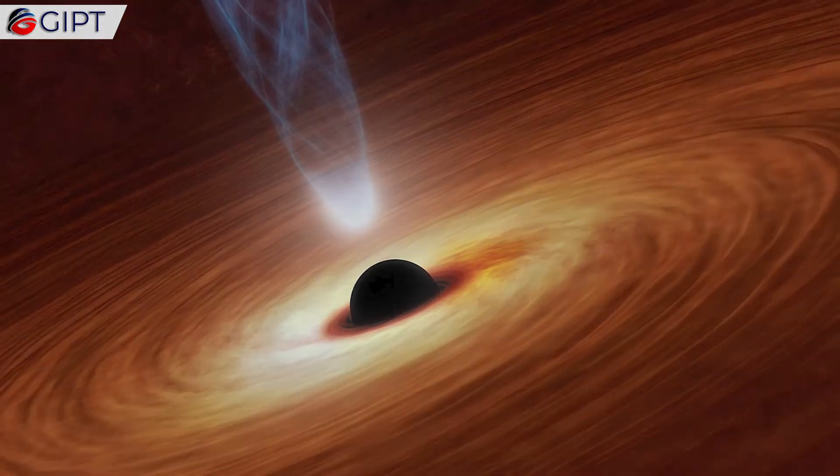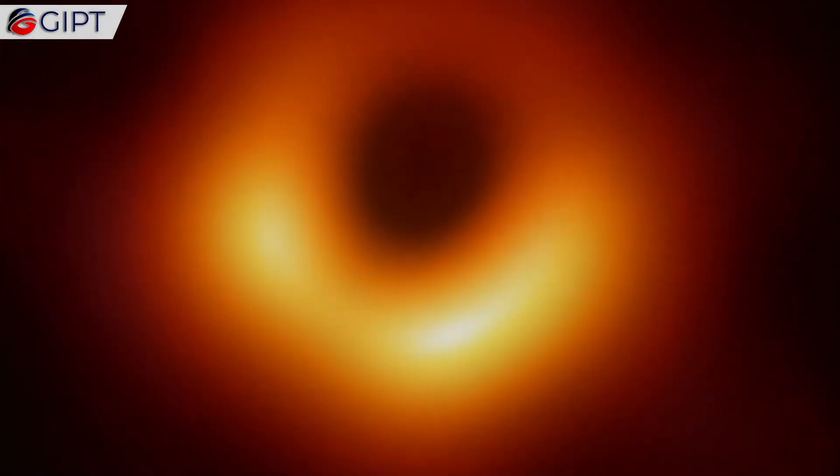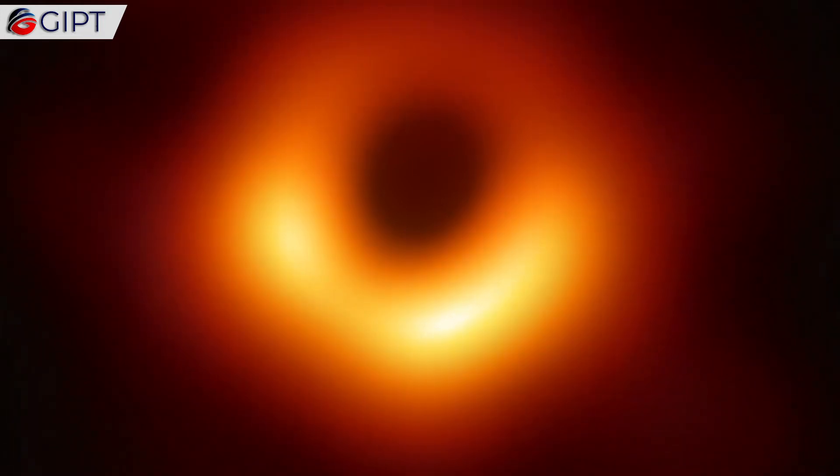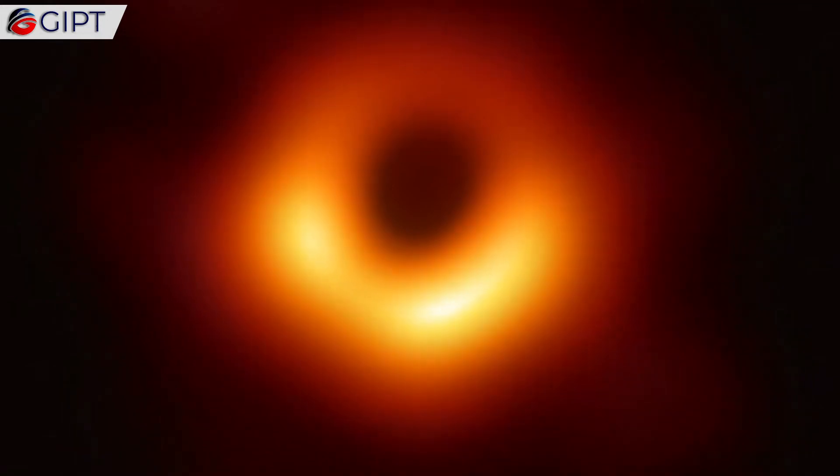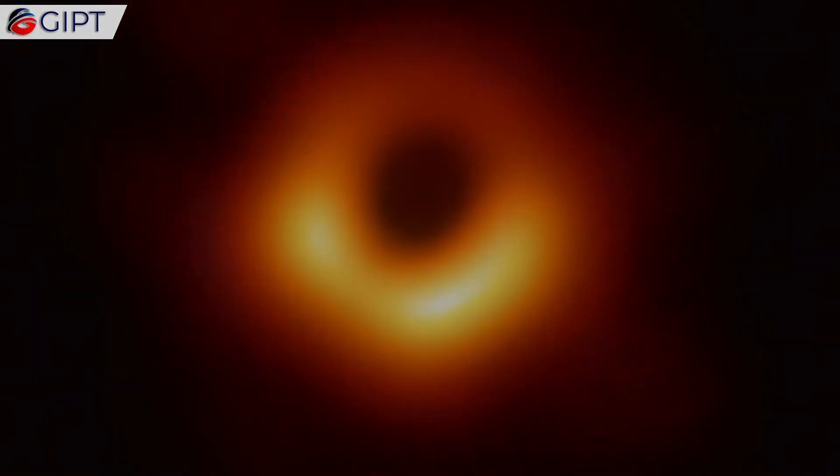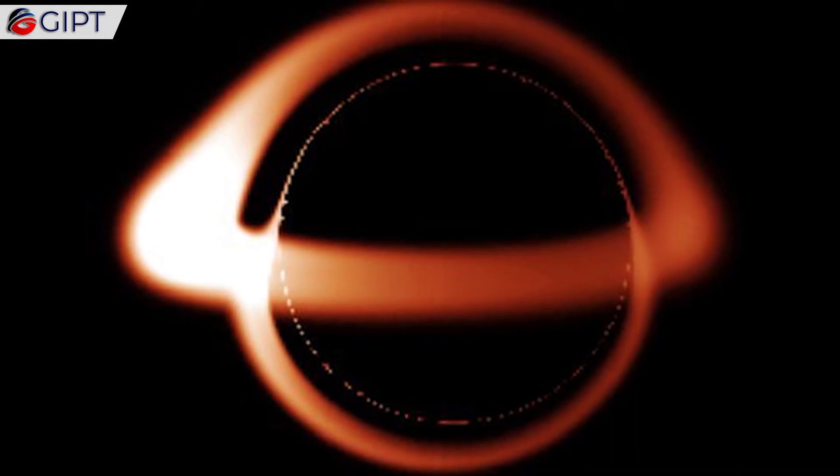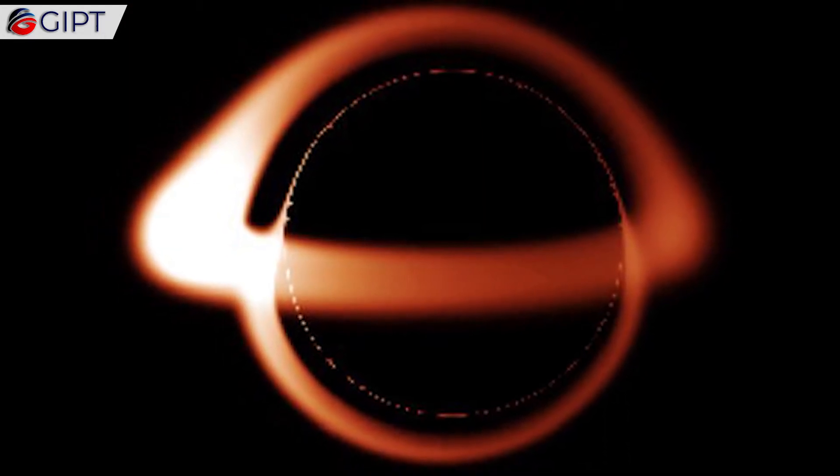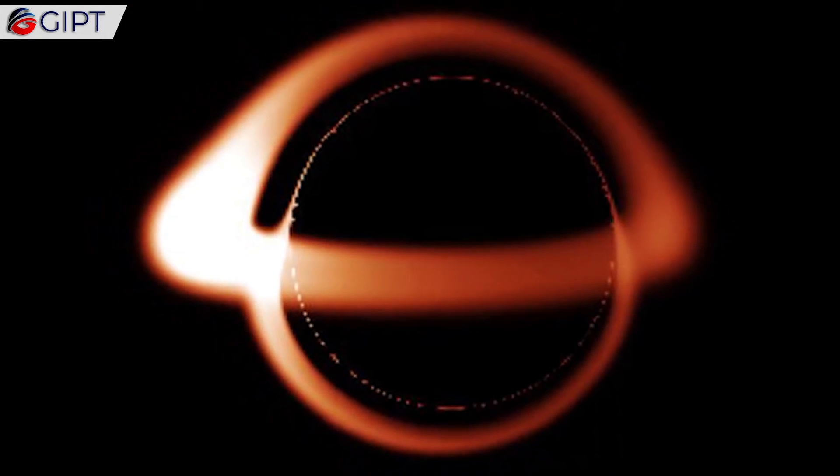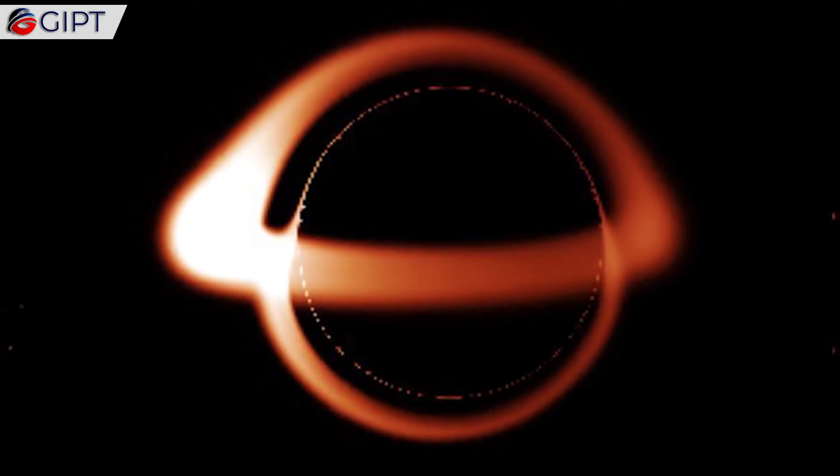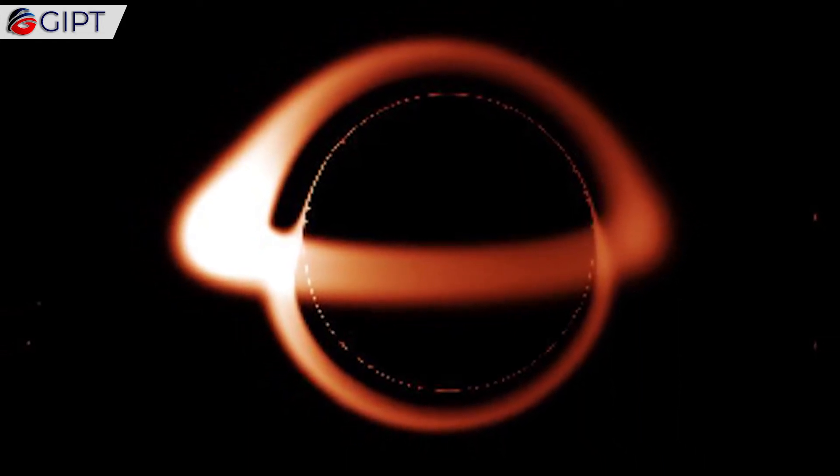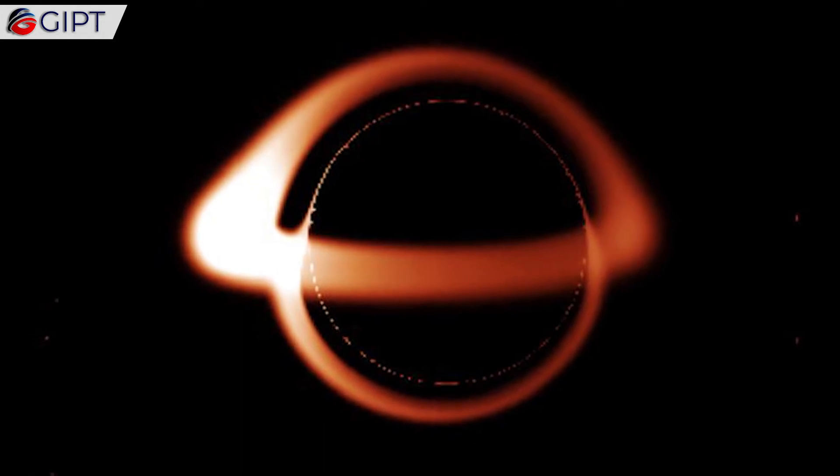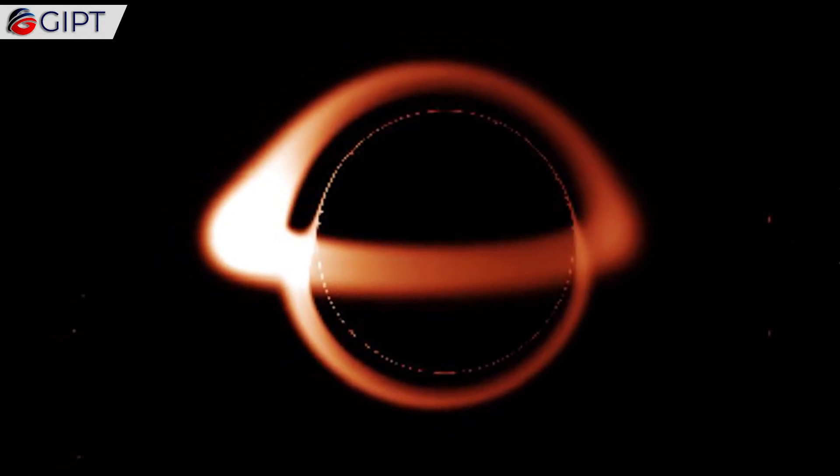Einstein ran into a similar problem with black holes. His theories predicted their existence, but he couldn't make sense of them. Black holes came in as a consequence of his relativity theories, supermassive events of space-time that possess infinite density and gravity. The idea was too far-fetched even for Einstein, but unlike gravitational waves, he never changed his mind. We now have plenty of evidence that black holes not only exist, but some grow to millions of times the sun's mass, including one at the center of the Milky Way.